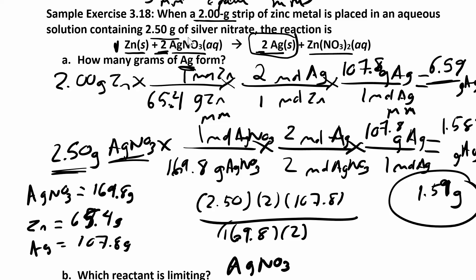For all the silver nitrate that we use up, how much zinc nitrate? Now we can look at the other product. We don't have to compare zinc to zinc nitrate because we know we're going to have extra zinc — not all of it gets used up. So since we know that silver nitrate is going to limit how much products we make, it limits how much silver you make, and it also limits how much zinc nitrate you make.